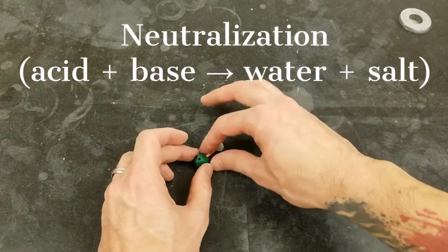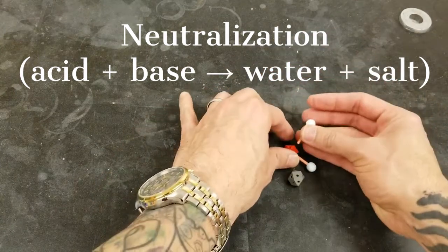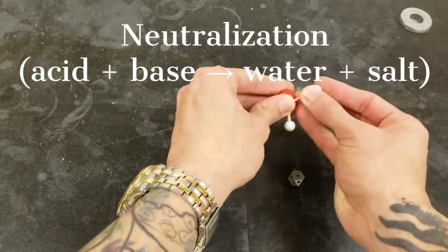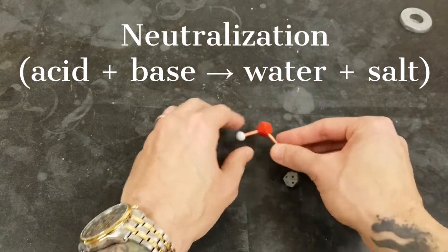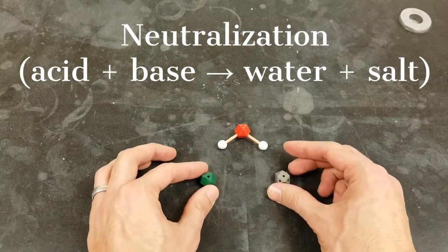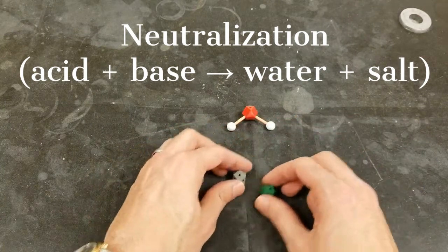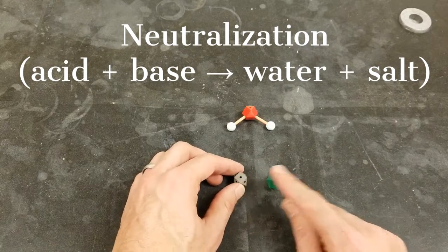The acid is going to lose its hydrogen and the base takes it in. And at the end of the reaction, the acid and the base have reacted to make water and a type of salt. In this case, sodium chloride.